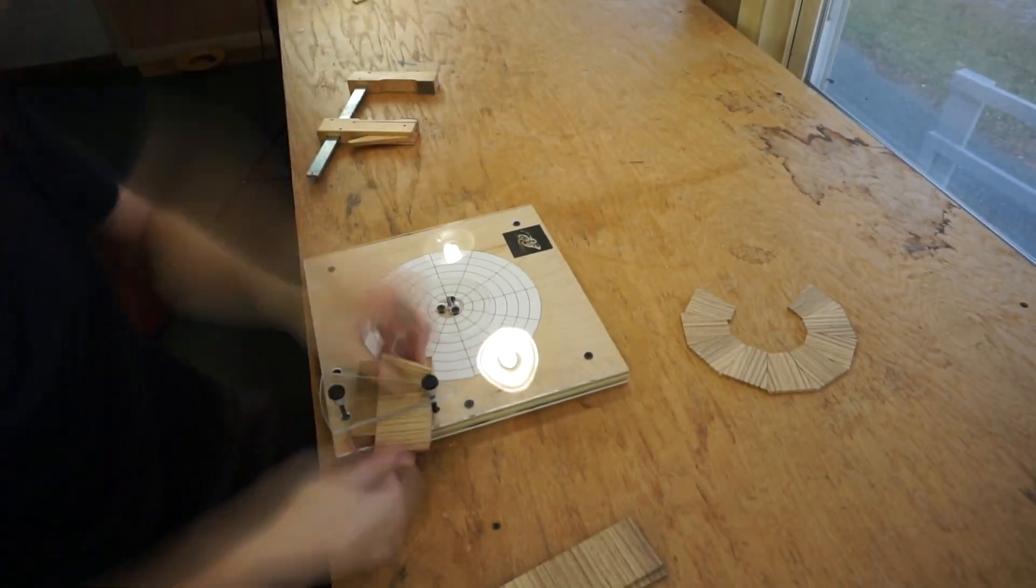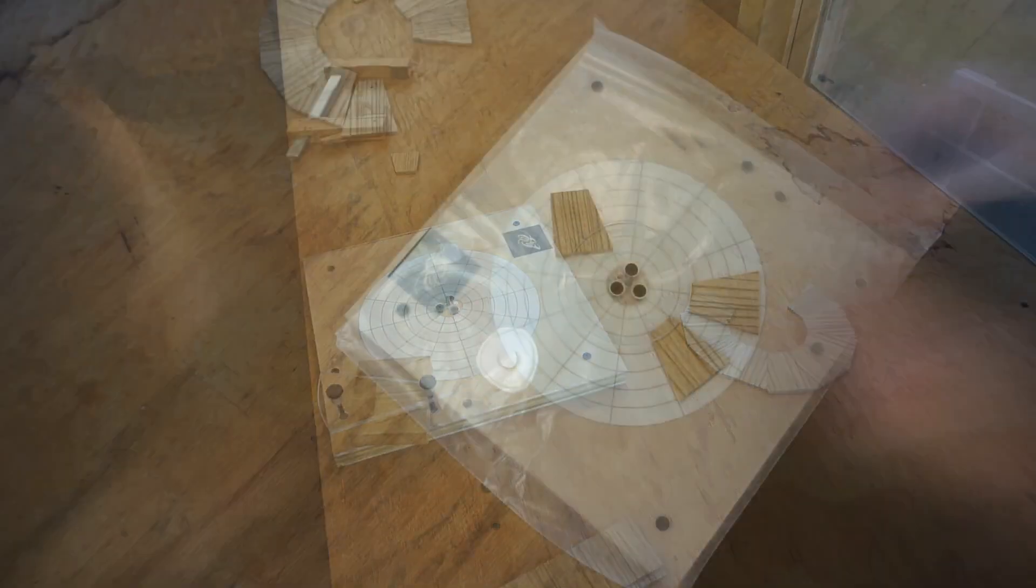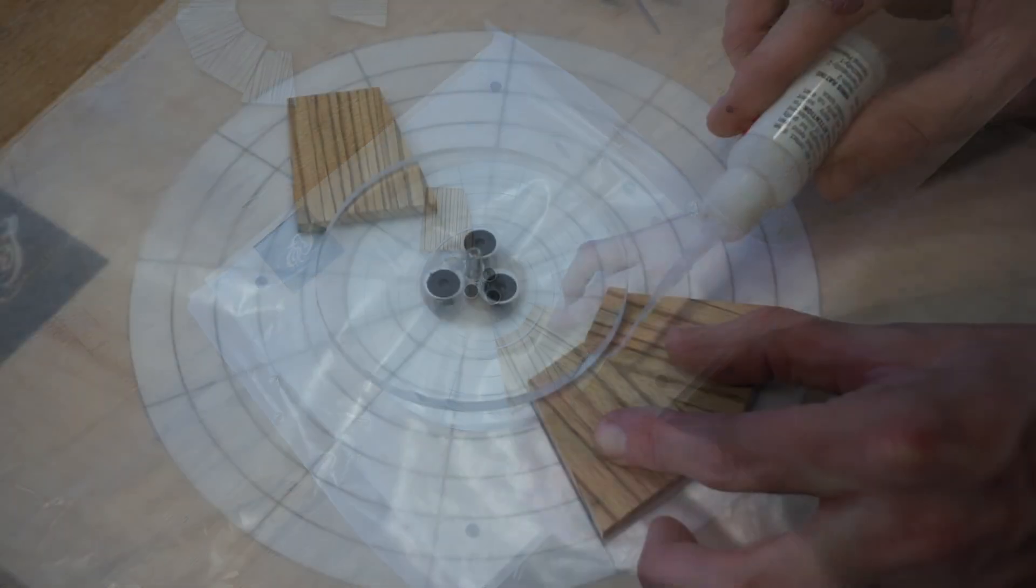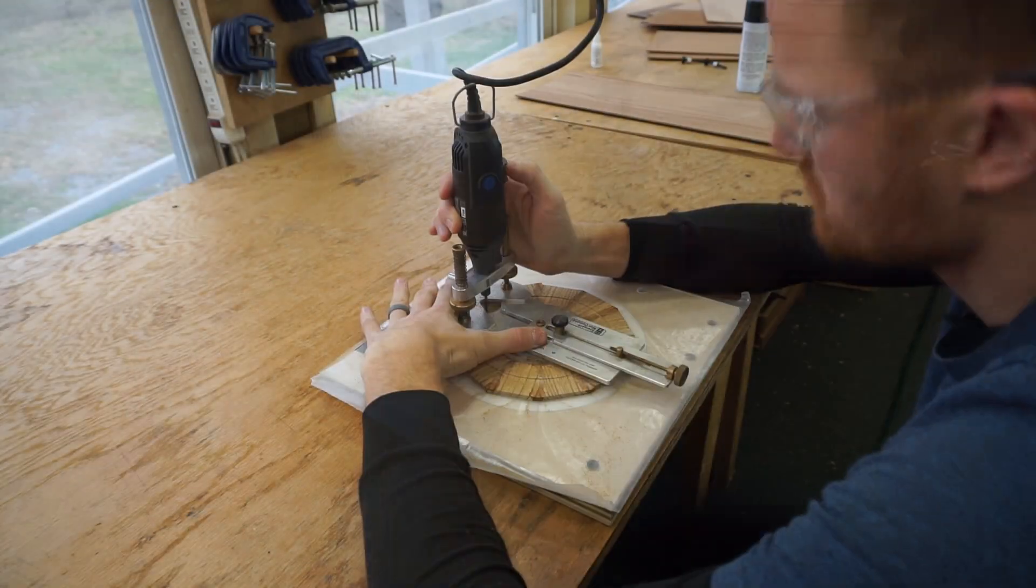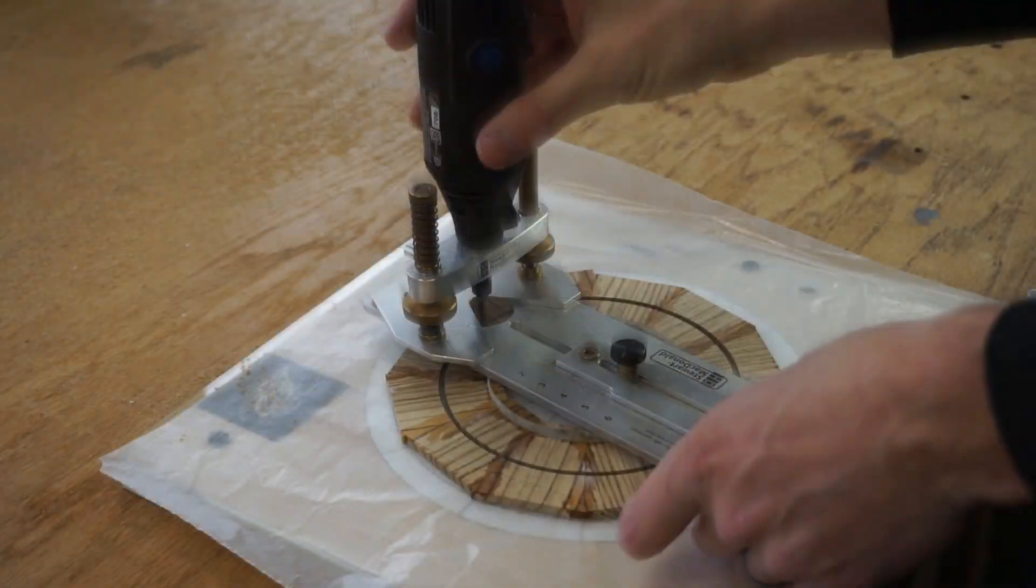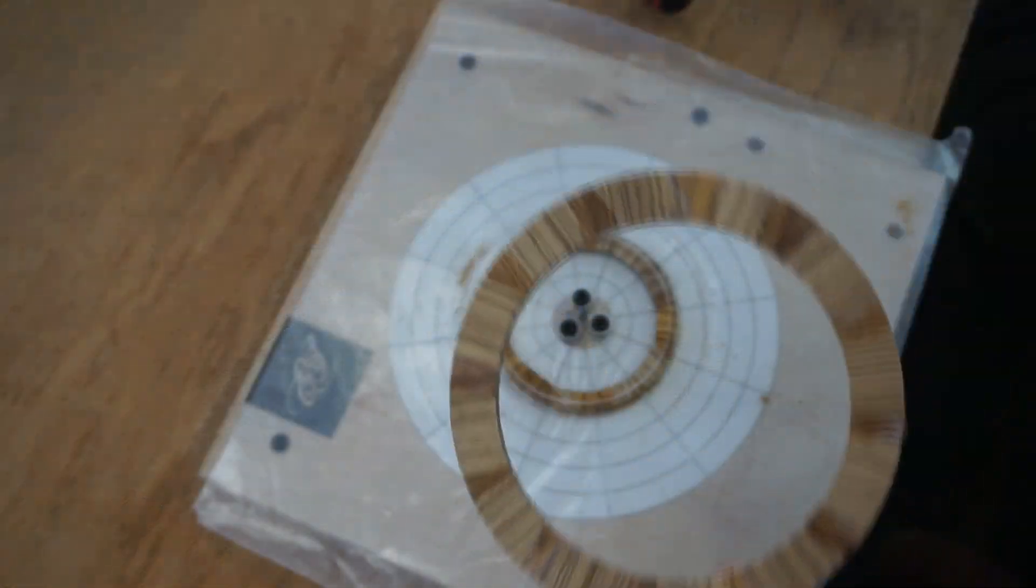In the last video I showed you how I create a basic radial rosette pattern using the radial rosette maker jig. If you haven't seen that video called Making a Radial Rosette, you should check that out first. It lays the groundwork for what I'm going to demonstrate here.